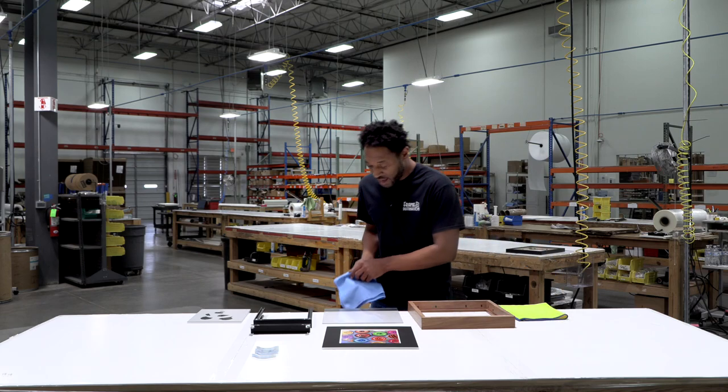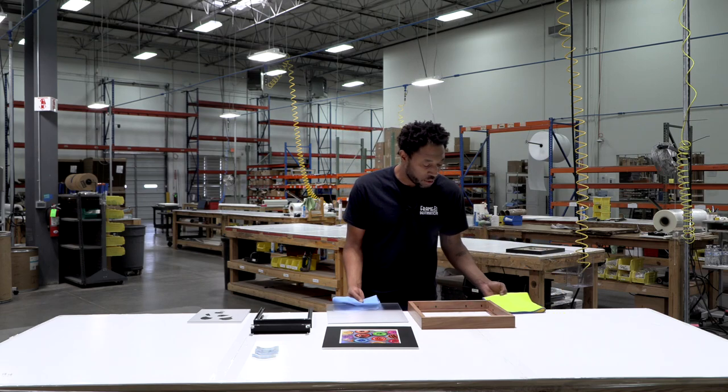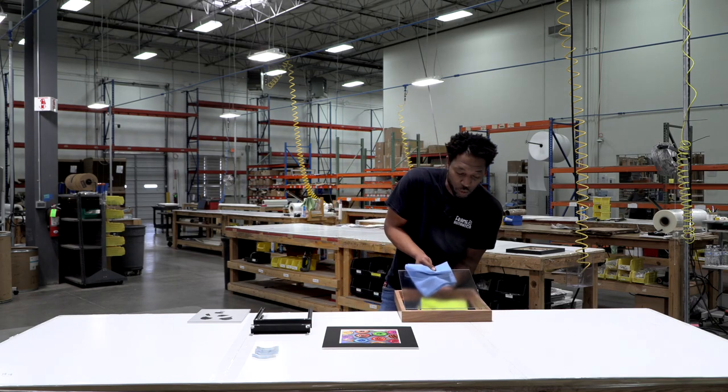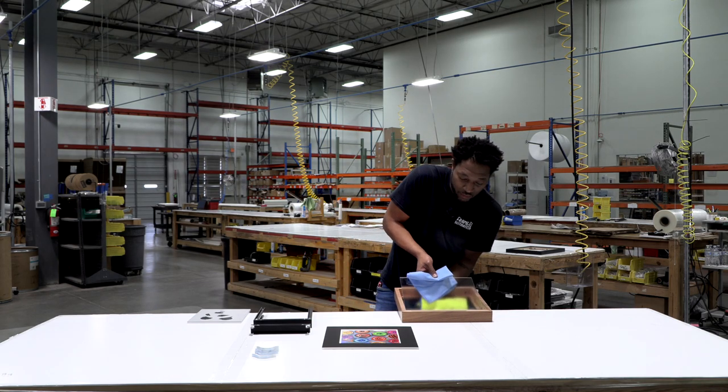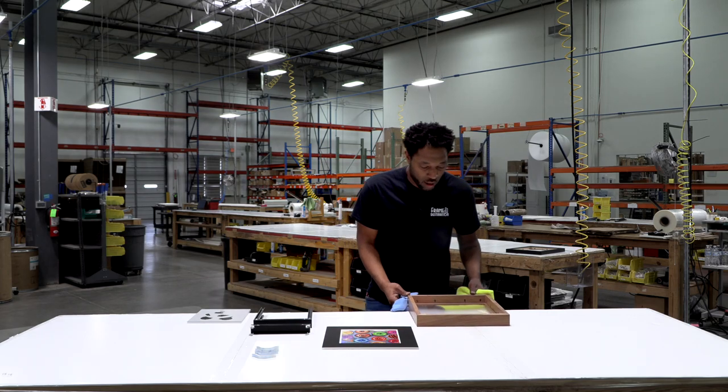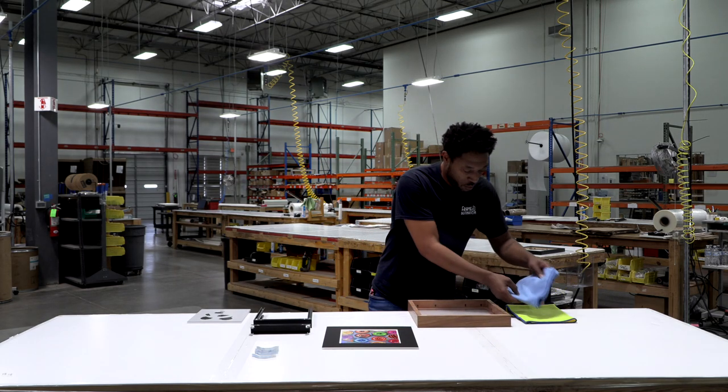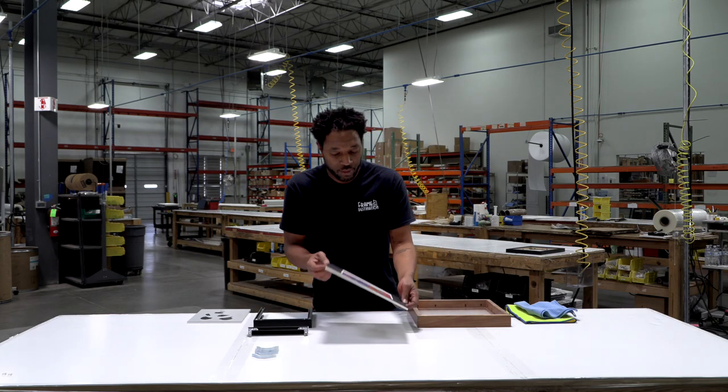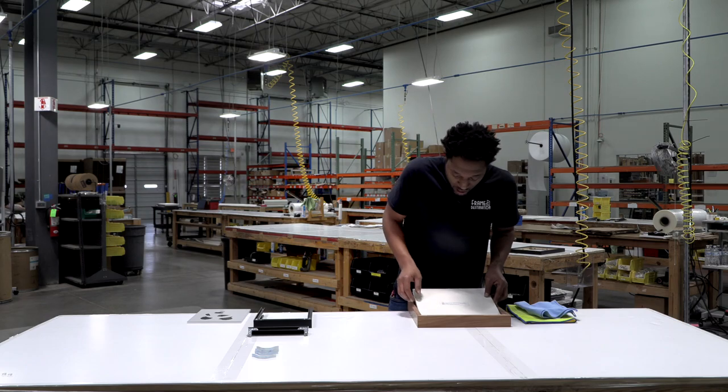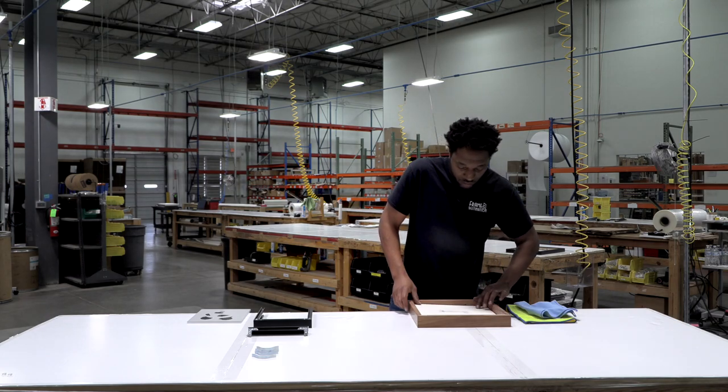When I am adding glass to my wooden frame, I like to use two microfiber towels. I'll use the bottom one as a cushion so I'm not dropping the glass directly into the frame. And then I'll grab the rest of my content and I will add that to the picture frame.